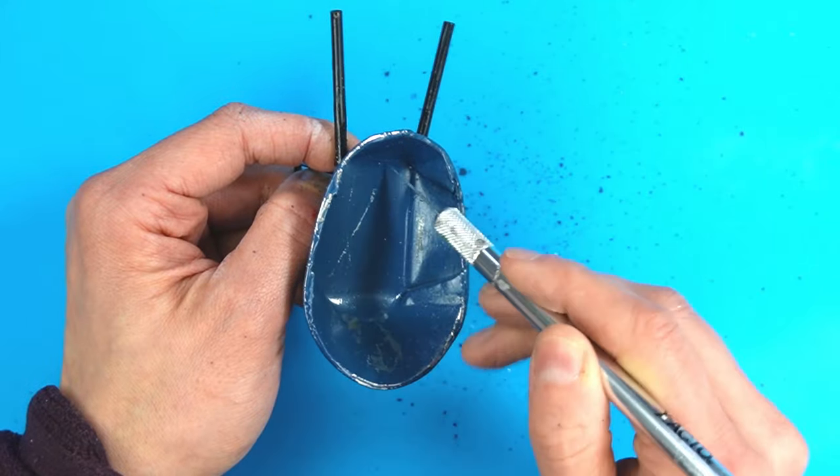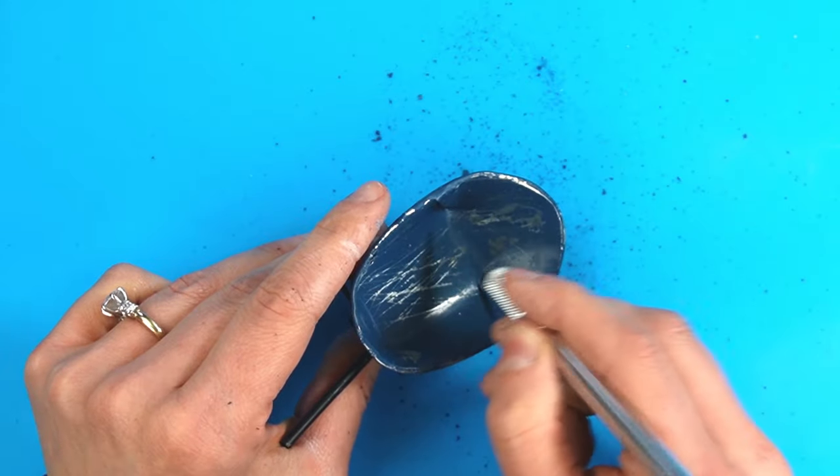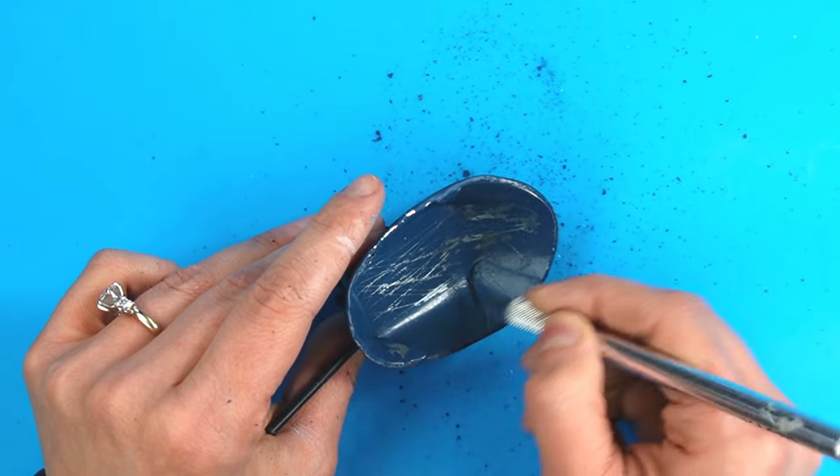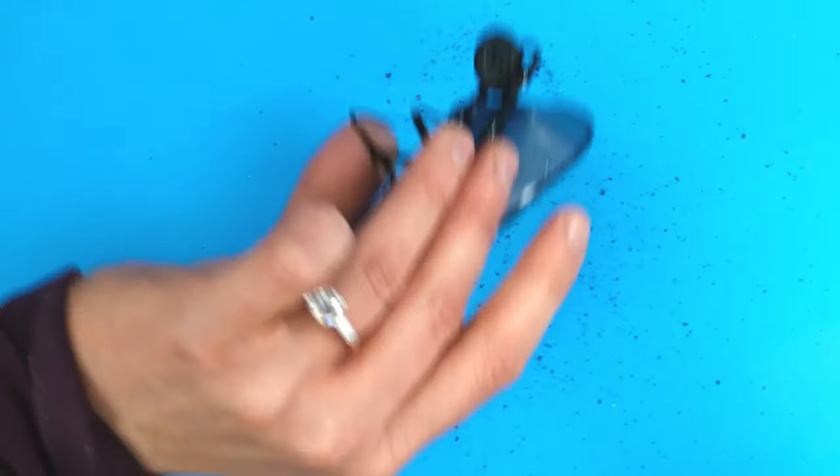When you're aging a miniature, it's good to create wear that's consistent with how the item was used to make it look realistic. So I'm adding scratches to the bottom in front of this wheelbarrow.